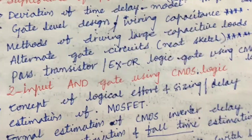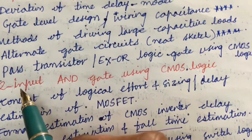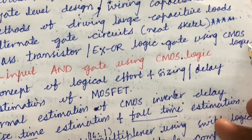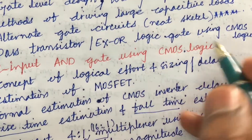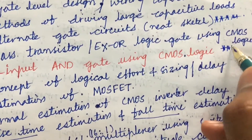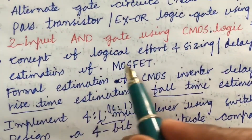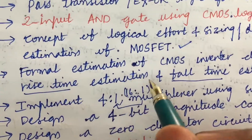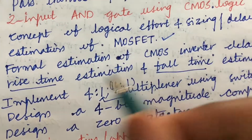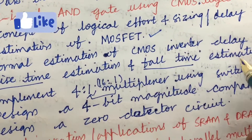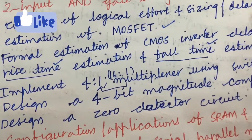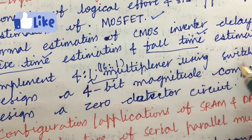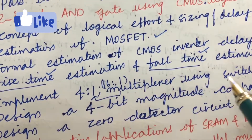From this unit also you are going to get two questions for sure. Pass transistor and EX-OR logic gate using CMOS logic and two-input AND gate using CMOS logic are also very very important questions. The concept of logic effort and sizing, delay estimation of MOSFET, formal estimation of CMOS inverter delay, rise time estimation and fall time estimation, differences between rise time and fall time, and implementation of a 4-to-1 multiplexer using switch logic are all expected topics.